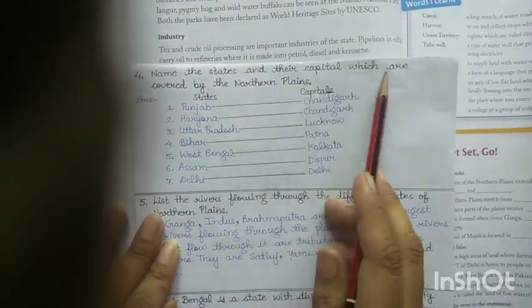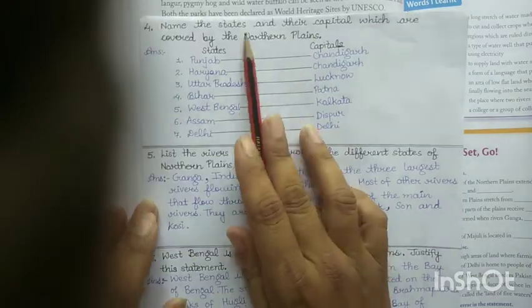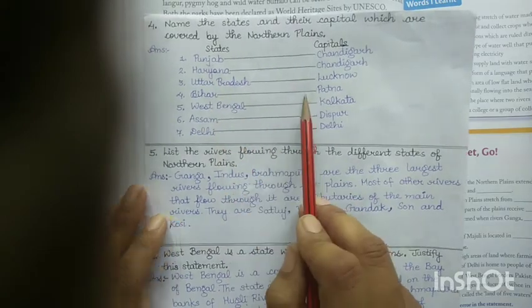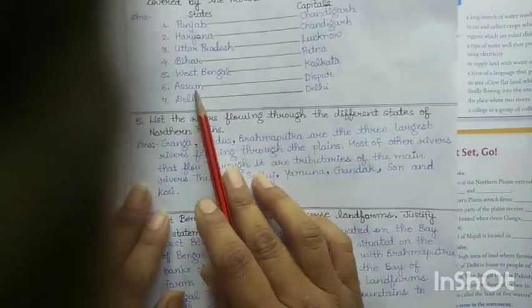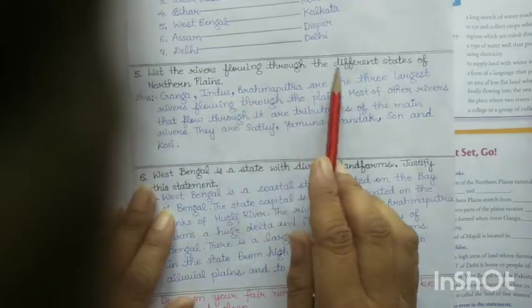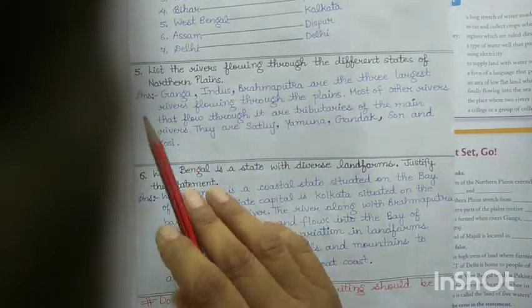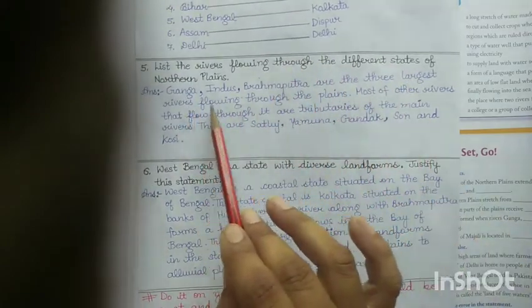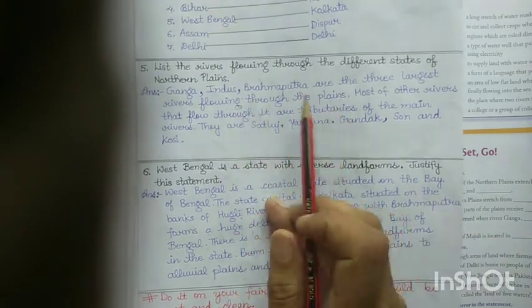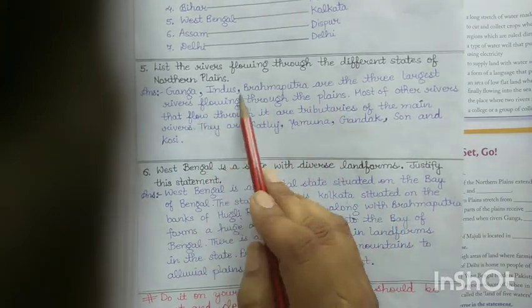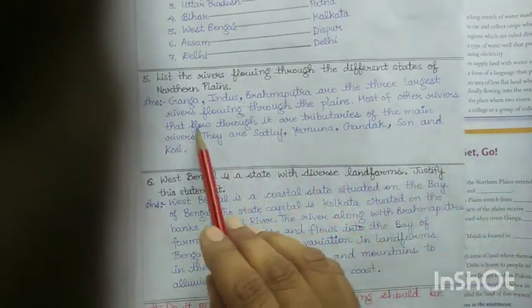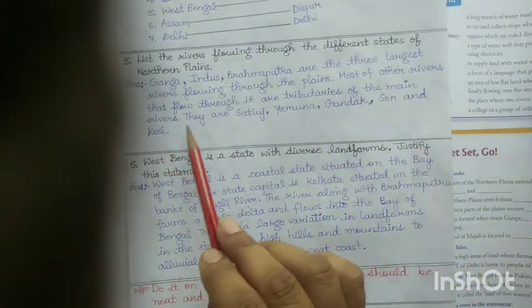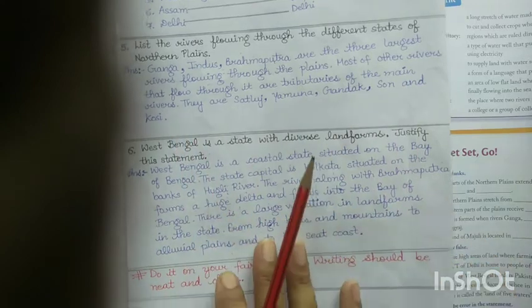Name the states and their capitals which are covered by the Northern Plains. These are the rivers flowing through the different states of the Northern Plains. Most other rivers that flow are tributaries of the main rivers.